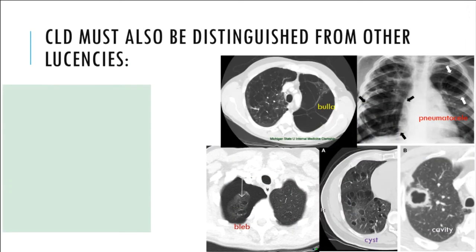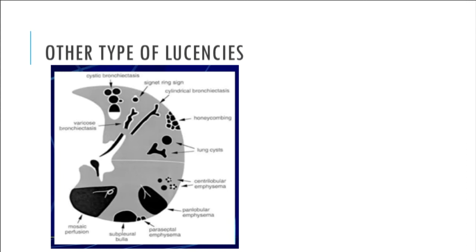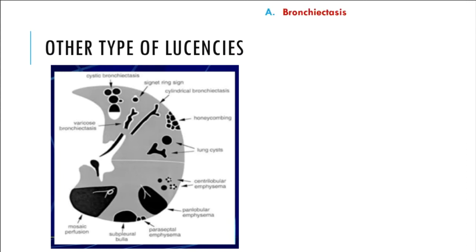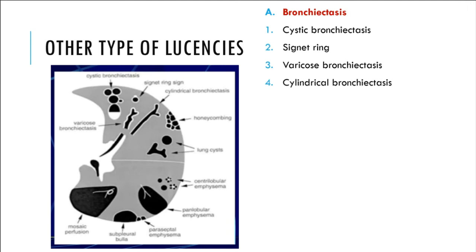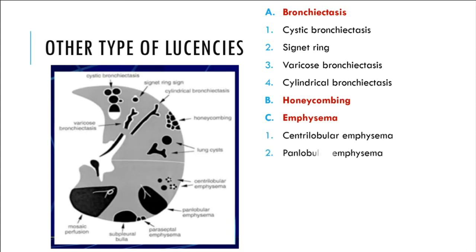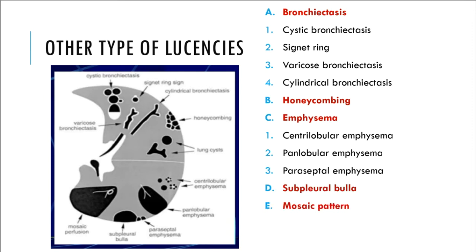CLD must also be distinguished from other lucencies: emphysema, cavity, bulla, bleb, pneumatocele, and other types of lucencies. These include cystic bronchiectasis (signet ring, varicose, cylindrical), honeycombing, centrilobular emphysema, panlobular emphysema, paraseptal emphysema, subpleural bulla, and mosaic pattern — all of which feature lucencies that mimic a pulmonary cyst.